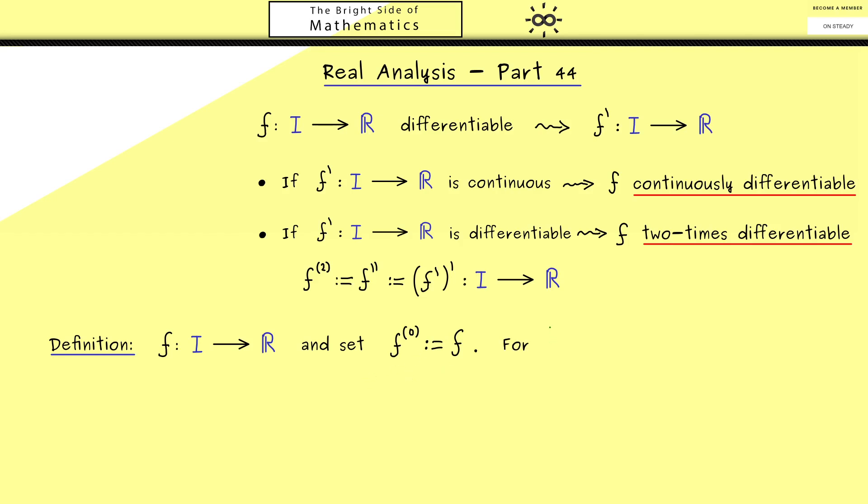You see this immediately because now we define for every natural number n the term n times differentiable. In order to do this we need to define the nth derivative, and you see we immediately get the definition inductively, which means by starting with the 0th derivative we get all the other ones. Then of course we call the function f n times differentiable if the nth derivative exists. So you see this is indeed the same thing we have done before, or in other words inductively it means the n-1th derivative is differentiable.